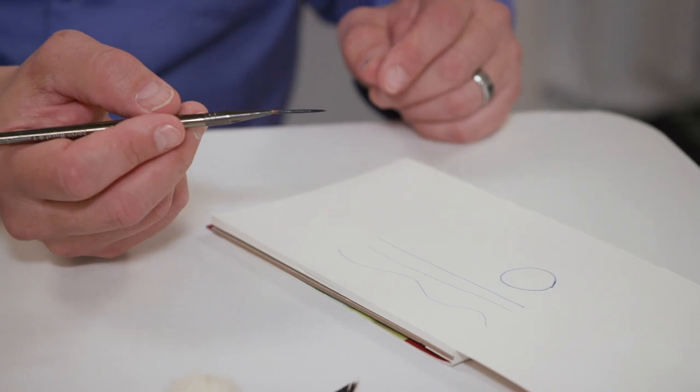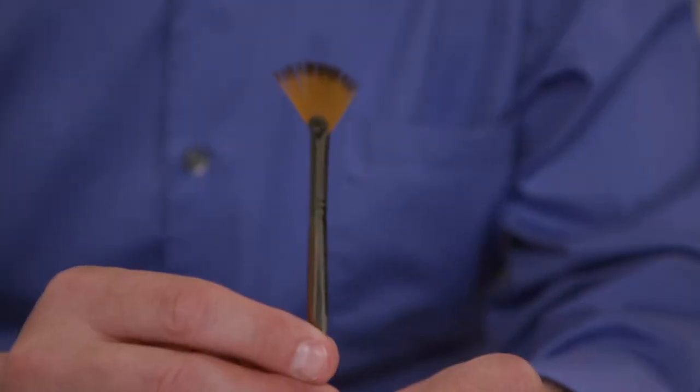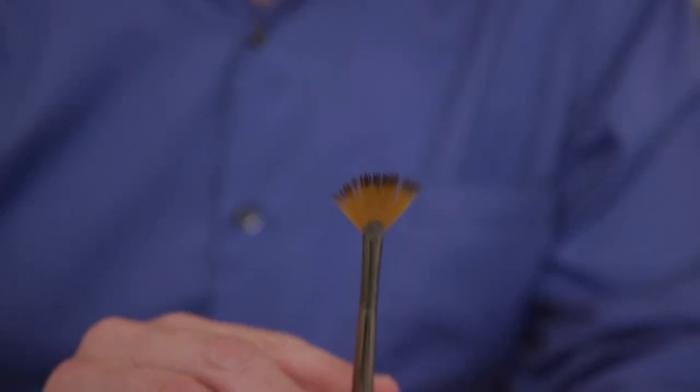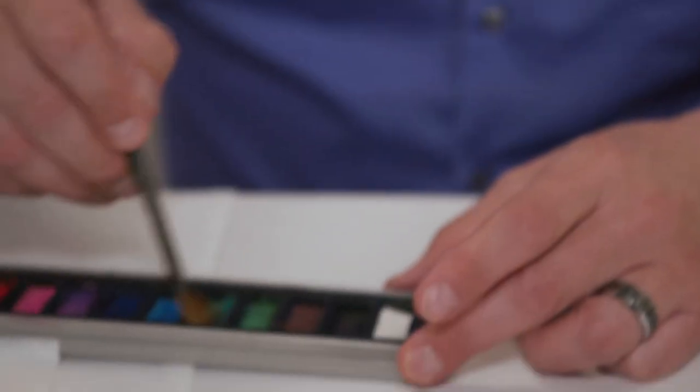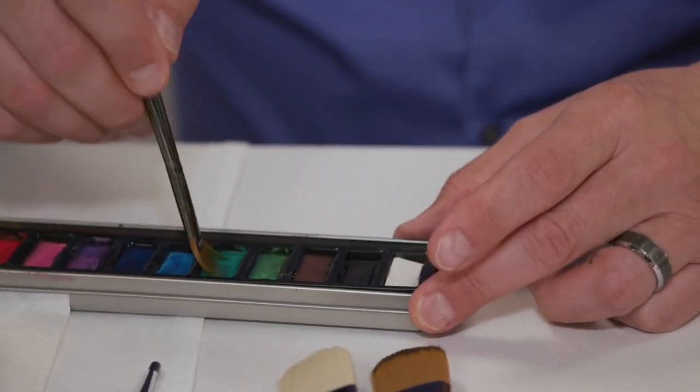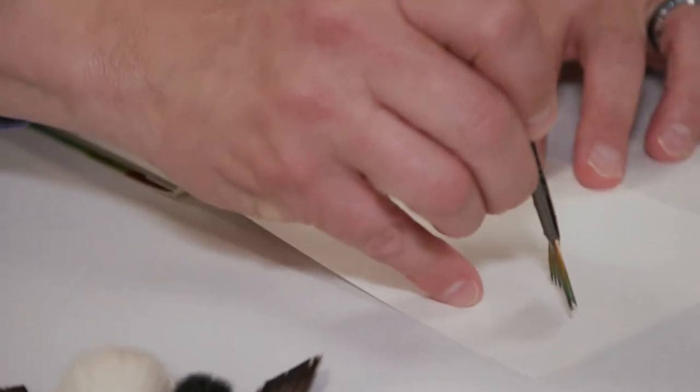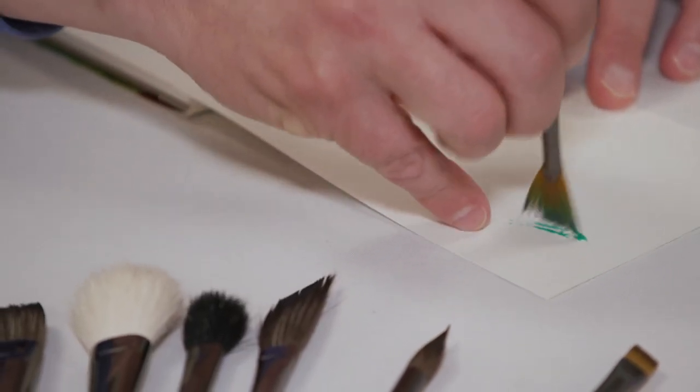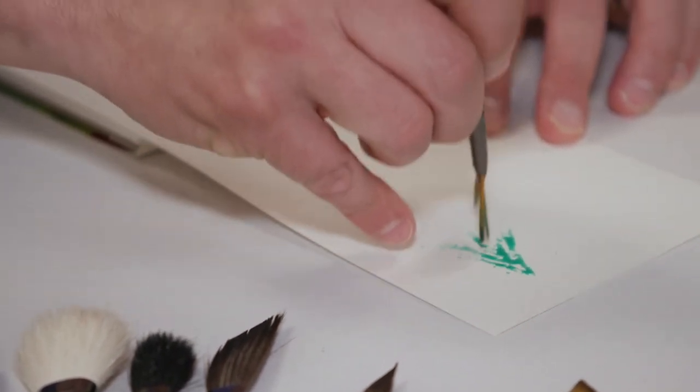Next brush I want to show you is the fan brush. A lot of people know this as a foliage brush. It's ideal for doing that. You can load it with color. And things like pine trees are easy to do just by tapping that brush down and utilizing that texture.